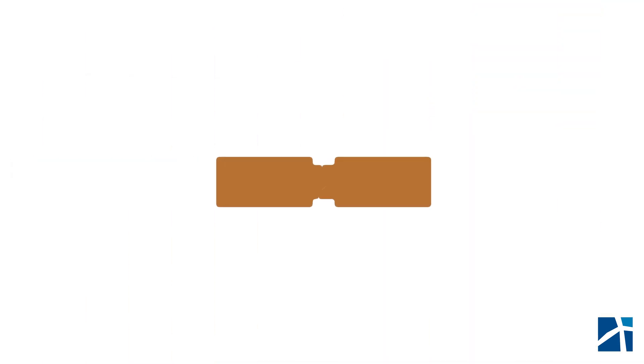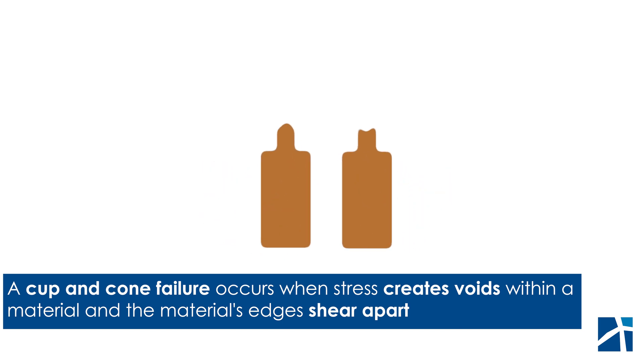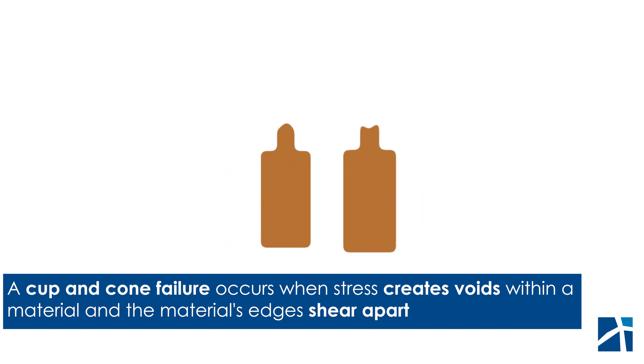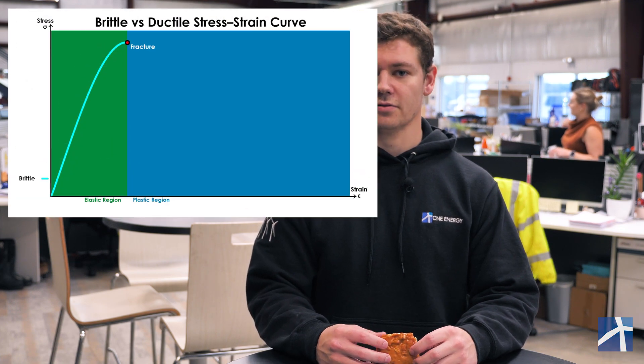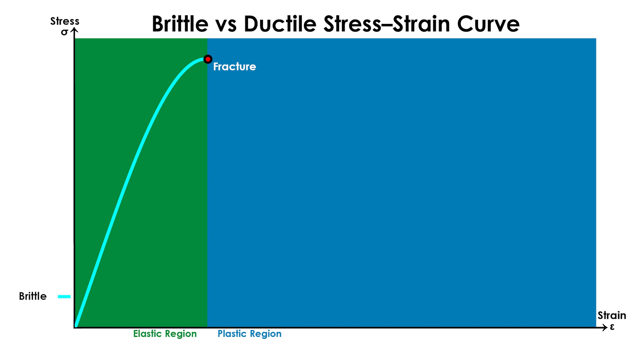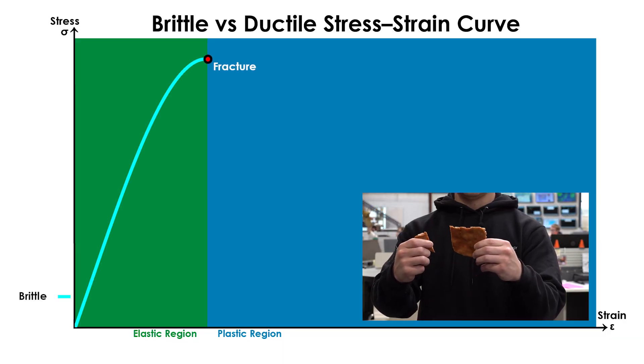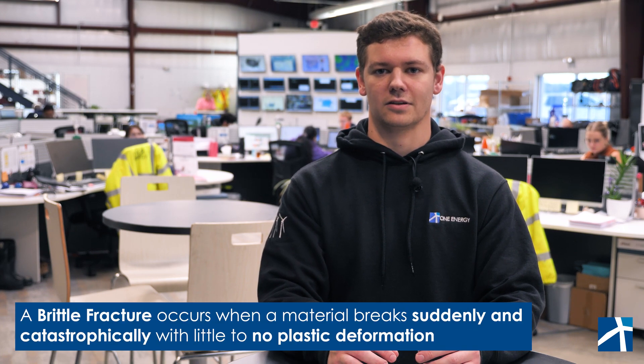When ductile materials reach their failure point, they typically form a distinctive shape at the break. This shape is referred to as the cup and cone failure because one side of the metal will form a cup shape and the other a cone shape. But what does this look like for a material that's non-ductile? Let's examine a brittle material stress-strain curve to see how it is different. You can see from how narrow the curve is that the material doesn't handle much deformation, but it can still take a decent amount of tension. Since it doesn't stretch much, when a brittle material breaks, it usually snaps with a big pop. Rather than having a slow stretching failure resulting in a cup and cone failure, brittle materials have clean, straight breaks. These are often referred to as a brittle fracture.